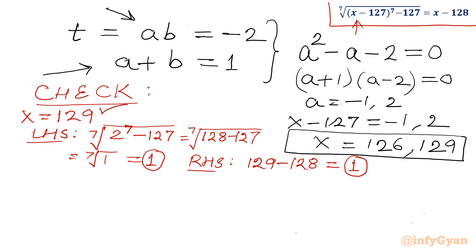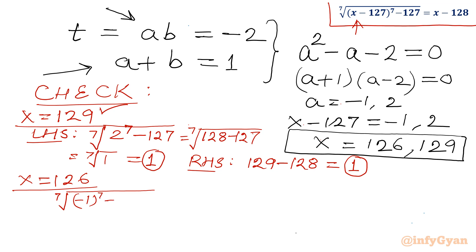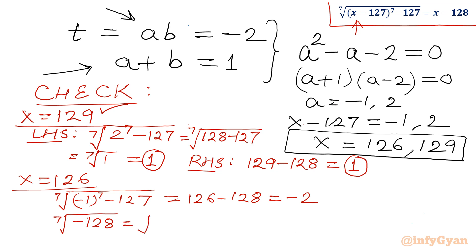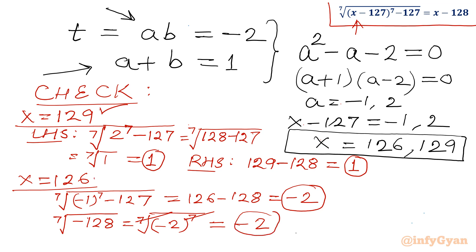Now let us check x equal to 126. LHS is the 7th root of (126 minus 127) power 7, minus 127, which is the 7th root of (minus 1) power 7, minus 127. Since the power is odd, this is minus 1, so we get minus 1 minus 127 equals minus 128, which equals the 7th root of (minus 2) power 7. Taking the 7th root gives minus 2. RHS is 126 minus 128 equals minus 2. Both sides equal minus 2, so this is also a true solution.